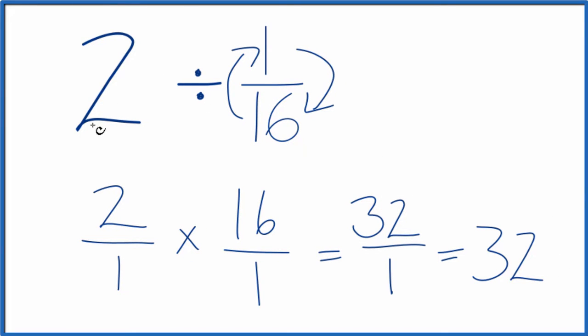So in answer to our question, 2 divided by 1/16, that's 32. If you were to take 32 and multiply it by 1/16, you'd get 2. So we did this correctly.